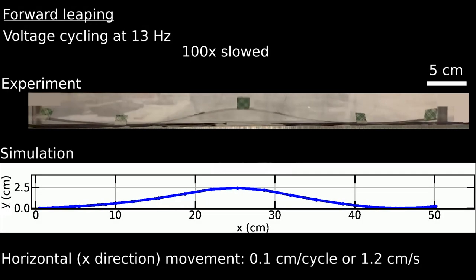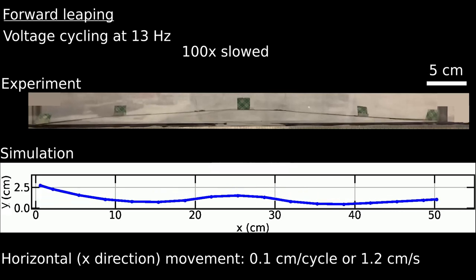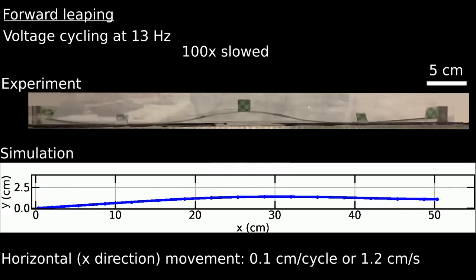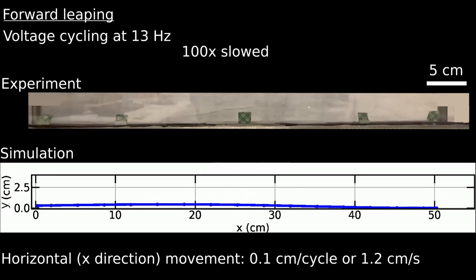We further explore robot horizontal motion by changing the voltage waveform. A forward leaping motion is observed at 13 Hz.